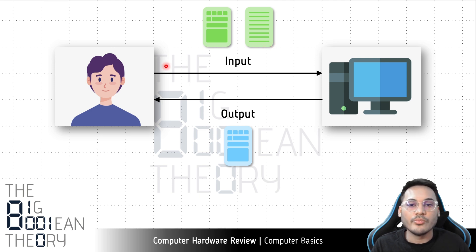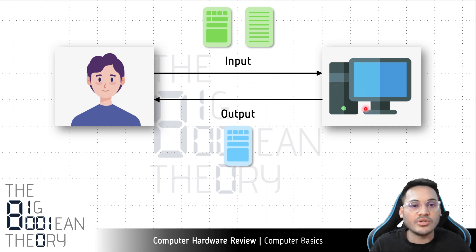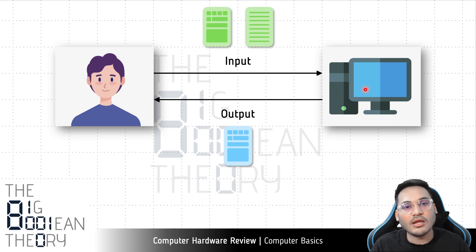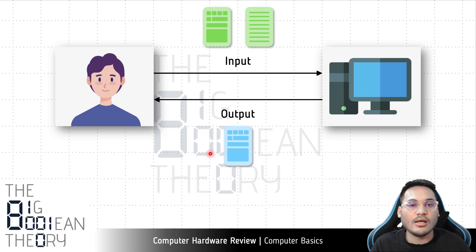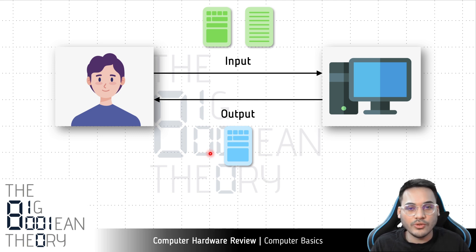The user gives the input data they want the computer to process, and apart from the data the user also supplies instructions in the form of a computer application or program. Once the computer has both the data and the instructions, it executes those instructions one by one. After executing all those instructions, the data has been processed and manipulated to produce some output — which could be text, image, audio, video, or any other file format.